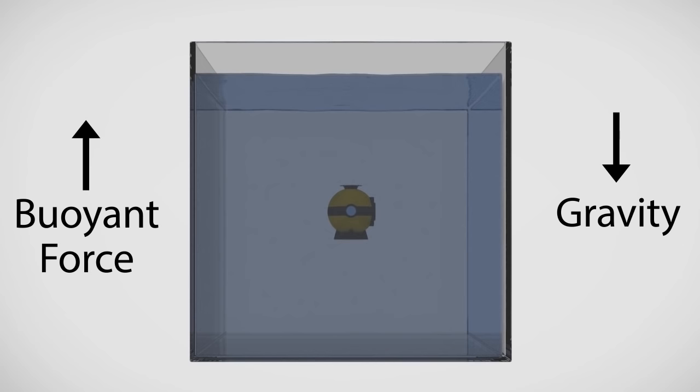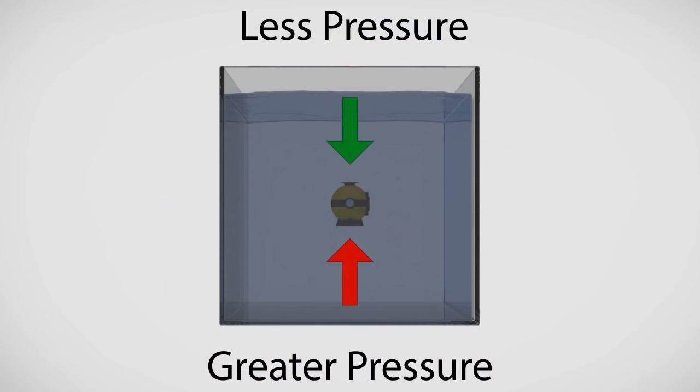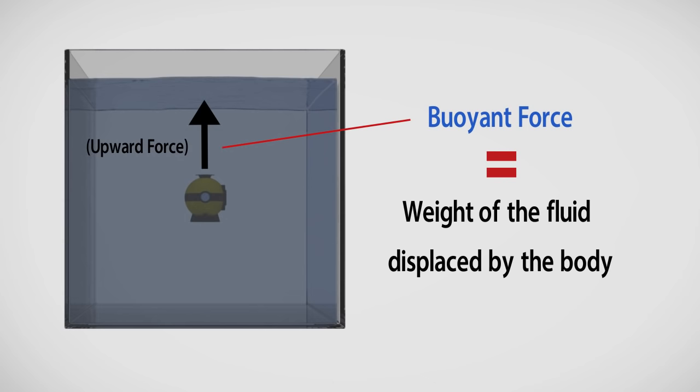The buoyant force occurs because the pressure in the fluid increases with depth due to a greater amount of fluid that is supported above. For example, if you go deep enough in a pool your ears will hurt due to this increased pressure. The pressure increase causes the upward force on the bottom of the body to be greater than the downward force on the top. The net effect is an upward buoyant force. The buoyant force is quantitatively given by Archimedes law. The buoyant force on a body in a fluid equals the weight of the fluid displaced by the body.